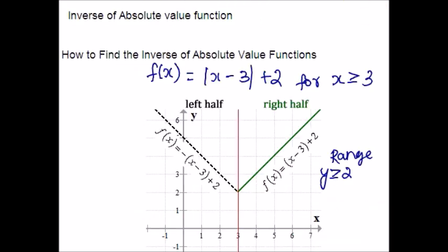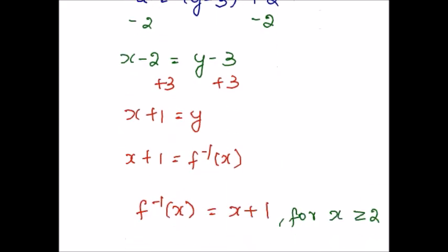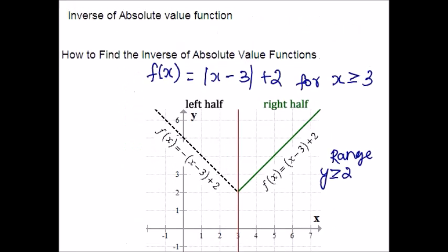Finding the inverse of an absolute value function is not possible without restriction because it does not have an inverse. But when you have some restriction for the domain, then you can find the inverse of the absolute value function. First graph it, look for the restriction, and determine whether you need the left half or right half. When writing the answer, please make sure you also write down the domain. Hope you are clear with finding the inverse of an absolute value function. If you have any query, please let me know. See you in the next video. Have a great time ahead. Thanks, bye.